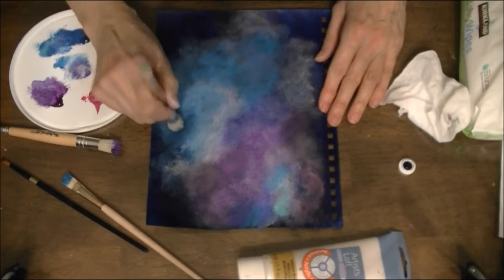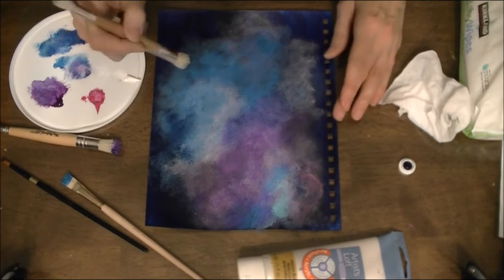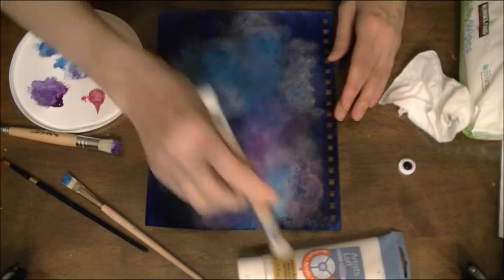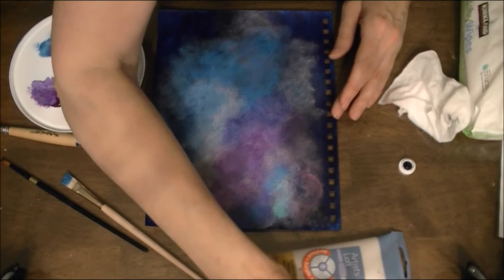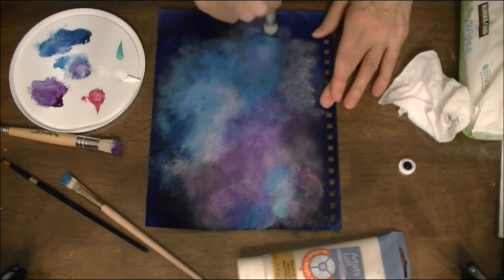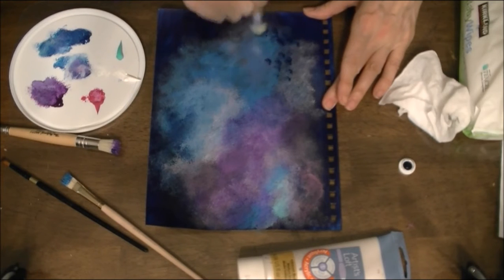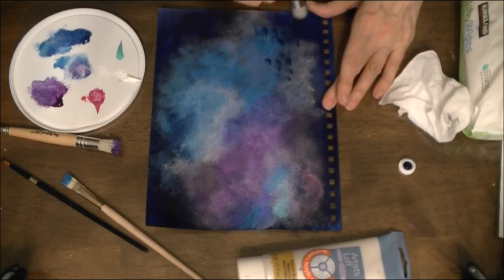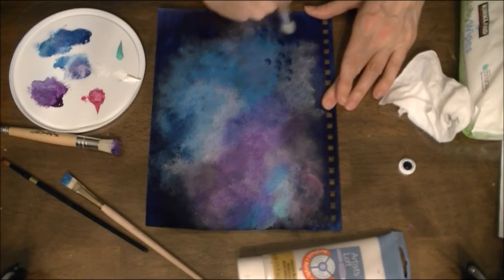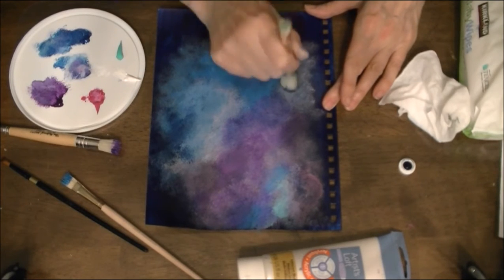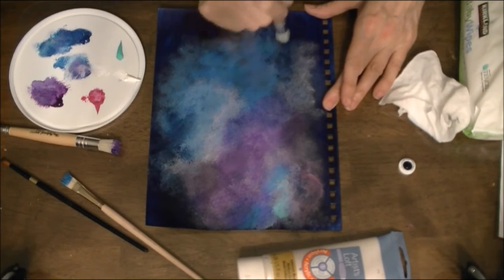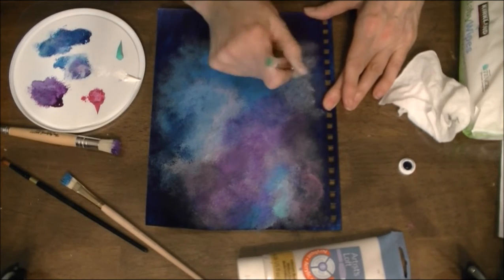So you can kind of see here where I brought in some of the darker, and I'm leaving almost like a cloud-like effect on my... I'm just bringing it right down back into my background I had there already with my Prussian Blue that I painted on.